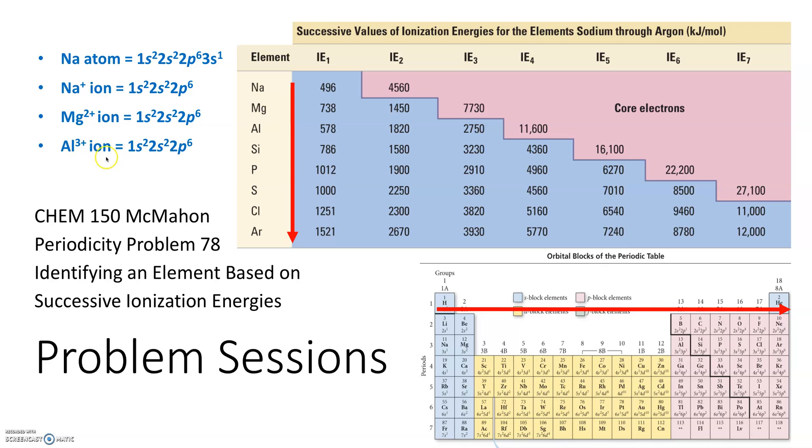Aluminum, it's a 3+. Why? It wants to lose one, two, three, but not four because it wants that neon configuration. What about silicon? Well, silicon's the same thing. It wants to lose one, two, three, four, but it doesn't want to lose a fifth. So there's a big jump, and that makes sense.